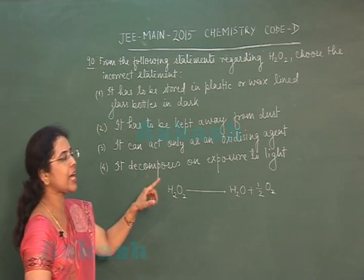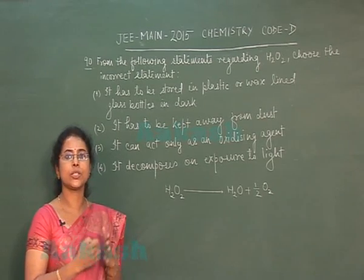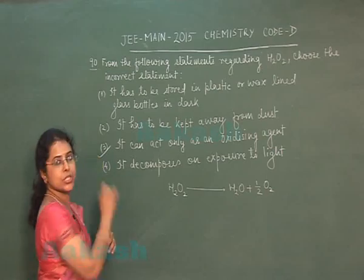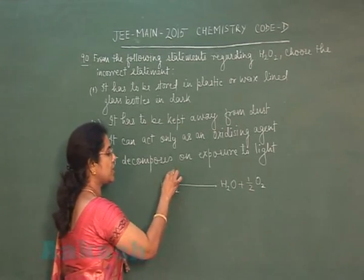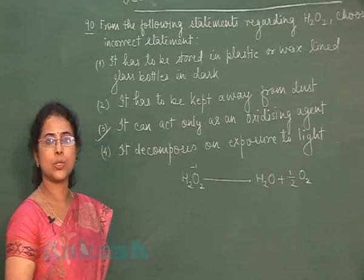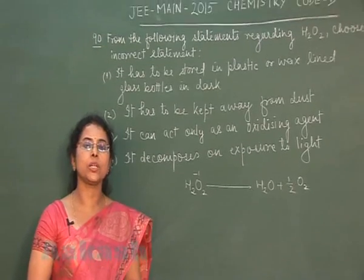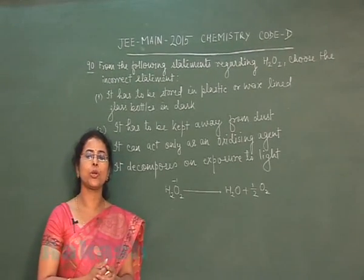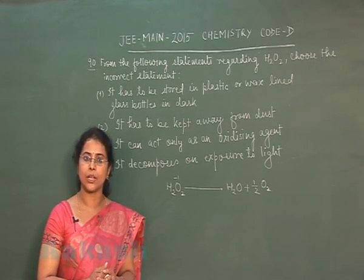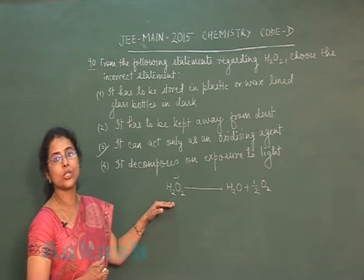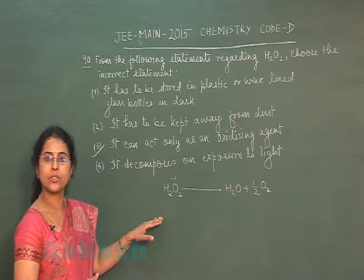Third option is, it can act only as an oxidizing agent. This statement is false statement. This is incorrect statement. Why this is incorrect? In case of hydrogen peroxide, this oxygen atom is present in minus 1 oxidation state, which is an intermediate oxidation state. So, hydrogen peroxide can easily lose an electron, it can accept an electron. It means, hydrogen peroxide behaves both as an oxidizing agent as well as reducing agent.